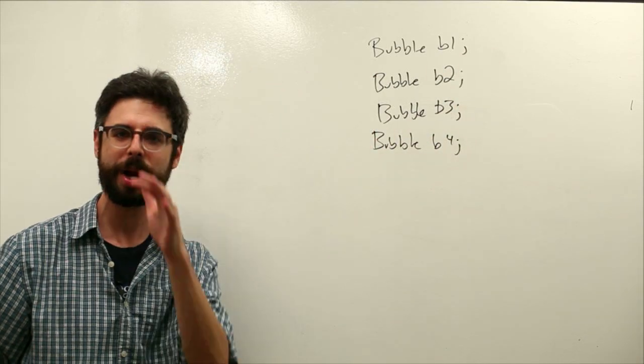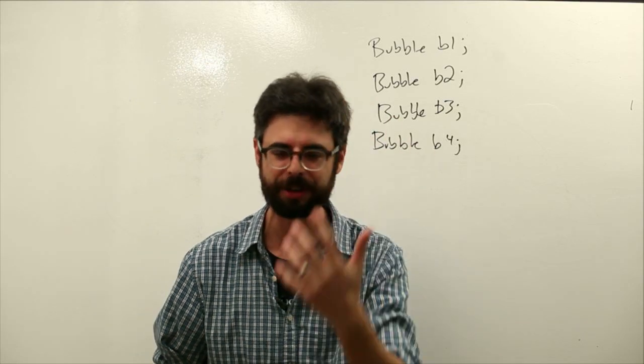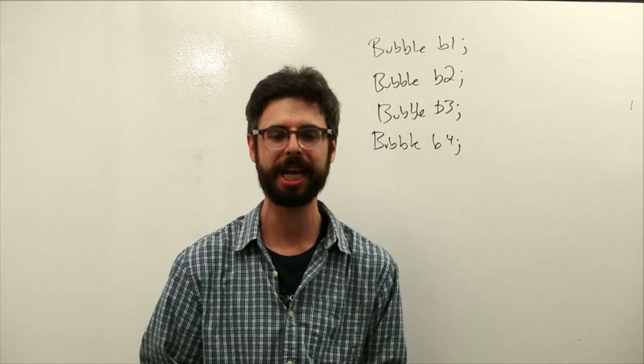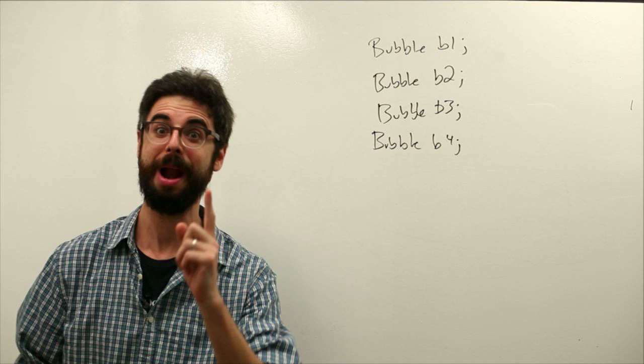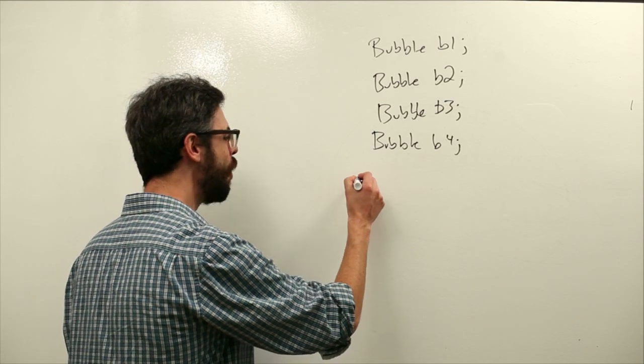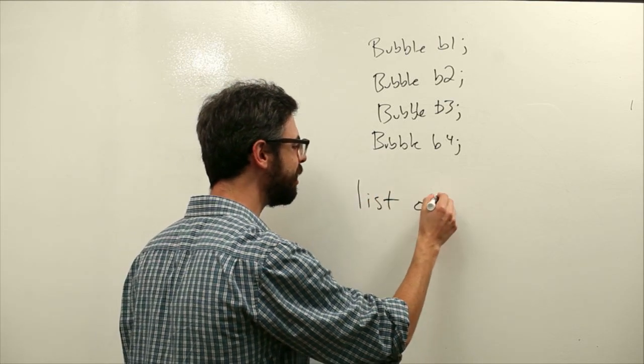We need a better solution. It's quite obvious to you in your mind probably what that solution is even though we haven't done it yet. But the solution is an array. What is an array? What do we want? We want to have a list of bubbles.